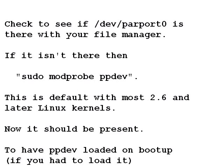To be able to access and use the printer port we will have to make certain changes to Linux and the default configurations on boot up. Open a file manager — PCMan file manager or whatever — and go to the folder /dev (device) and see if you have parport0. If it is there you are pretty well good to go. It is present on most newer Linux kernels, particularly from 2.6 and later. If not, assuming you have sudo privileges, type on the terminal: sudo modprobe ppdev, and press enter. Check back and it should be there now.